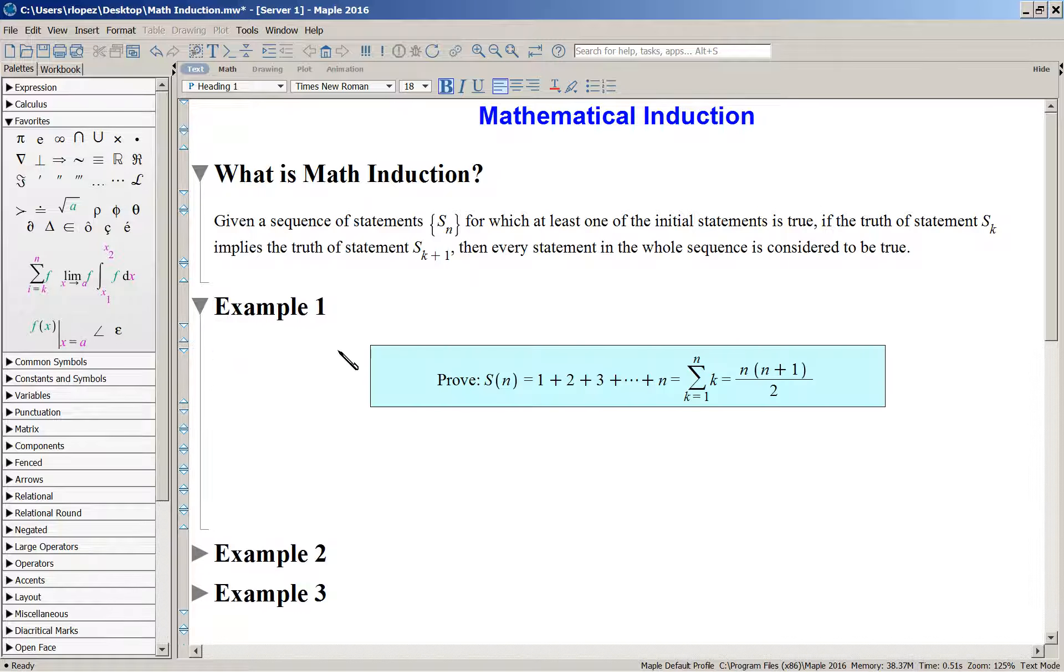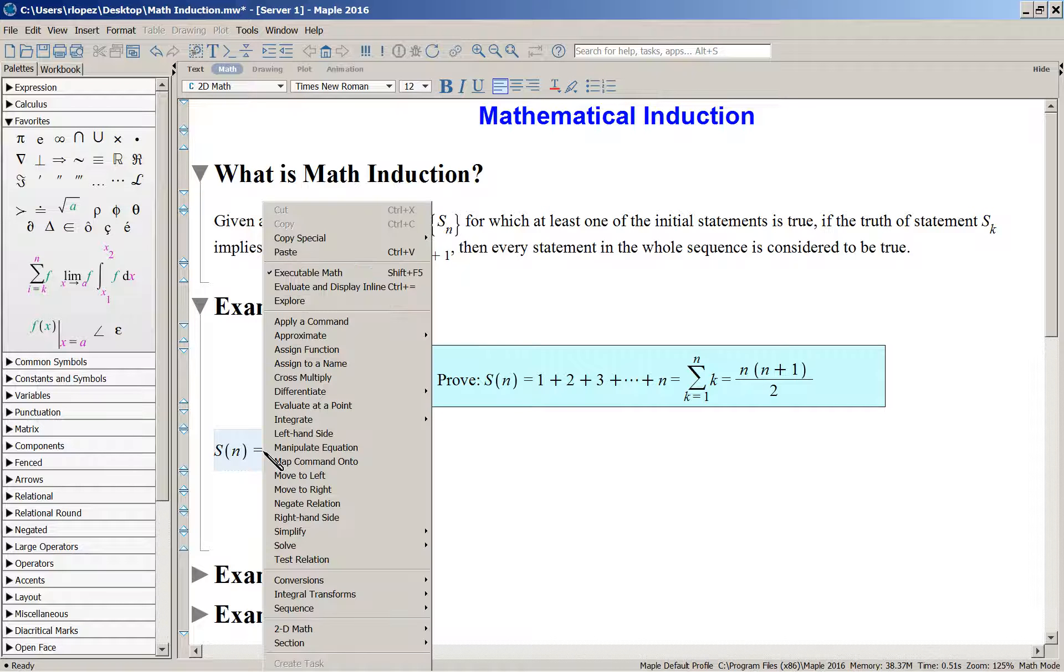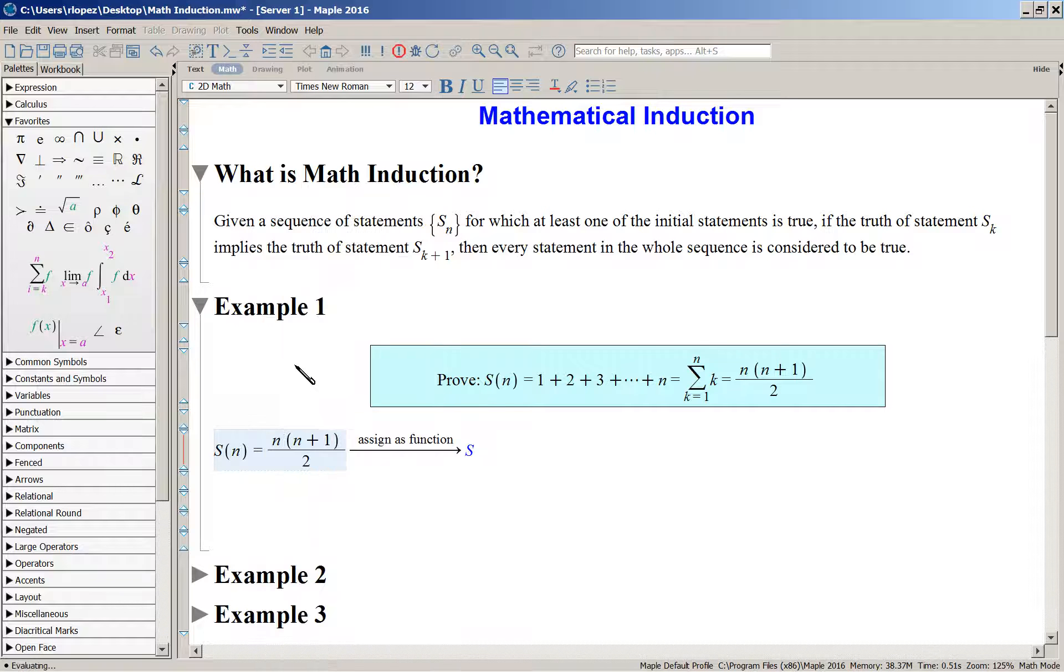So the typical example that students get to see are examples like this. Prove that the sum of the integers one through n is given by this expression n times n plus one over two. Well how might we do that? Well let's write S of n equal to this fraction, and I will bring that down and use this pop-up menu to define that as the function S of n.